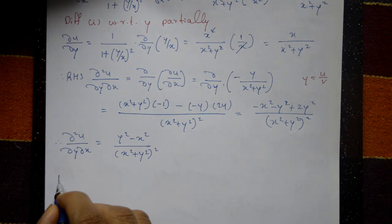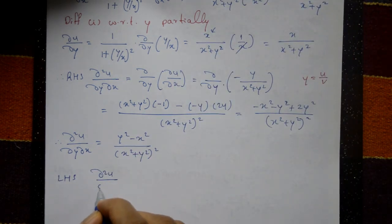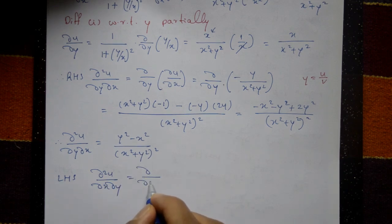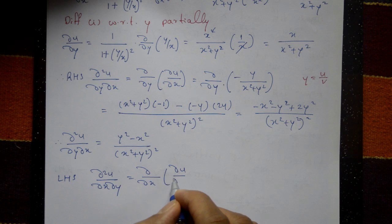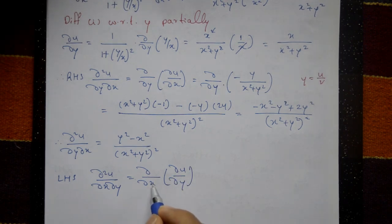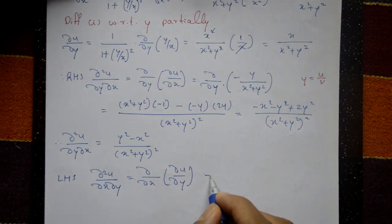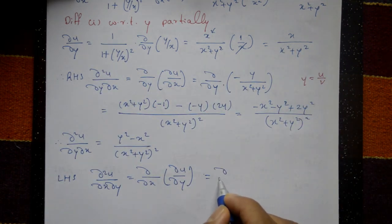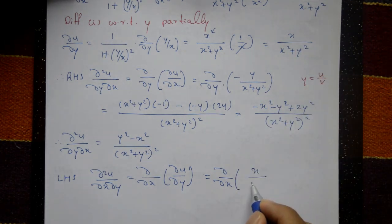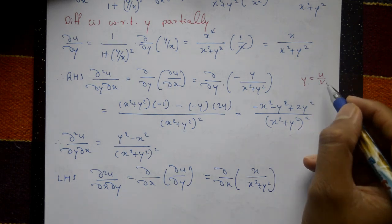Now take the left hand side: ∂²u/∂x∂y means ∂/∂x of (∂u/∂y). Differentiate ∂u/∂y, which is x/(x² + y²), with respect to x, again using the quotient rule.